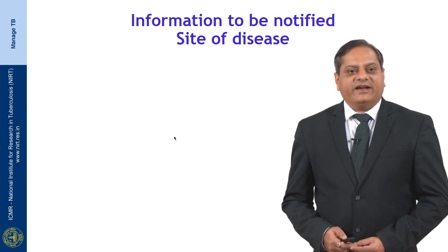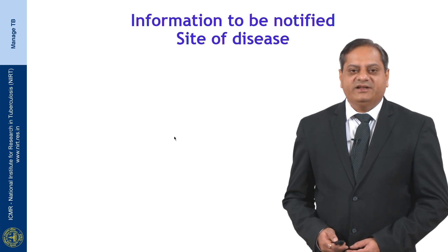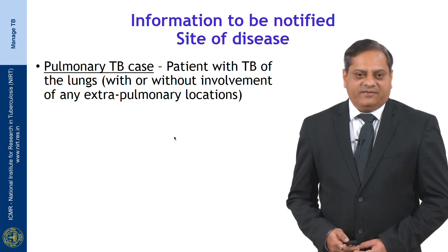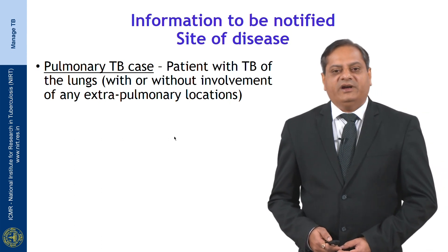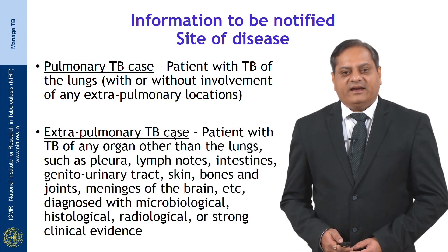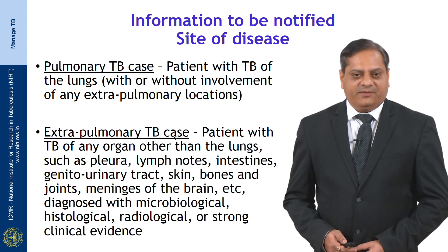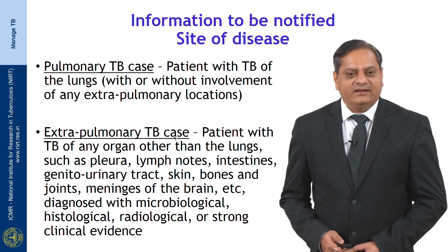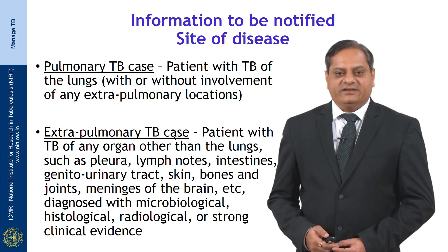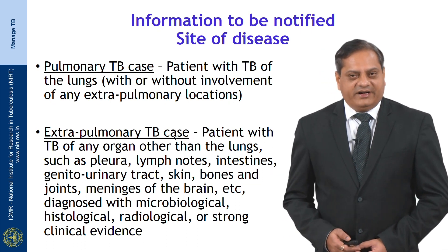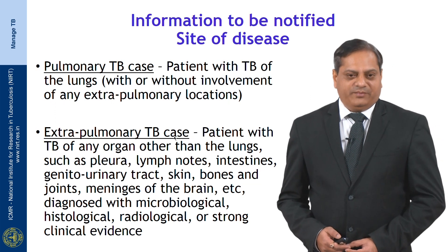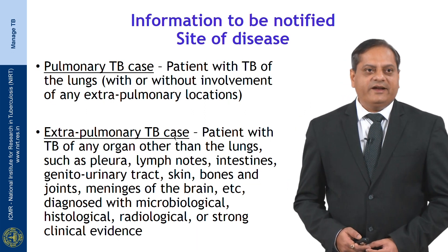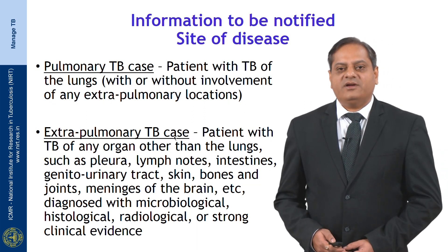The site of disease must also be notified. It can be pulmonary — a patient with tuberculosis of the lungs with or without involvement of any extra-pulmonary locations. The other type is extra-pulmonary TB: a patient with tuberculosis of any organ other than the lungs, such as pleura, lymph node, intestines, genitourinary tract, skin, bones, joints, meninges, etc., diagnosed with microbiological, histological, radiological, or strong clinical evidence.